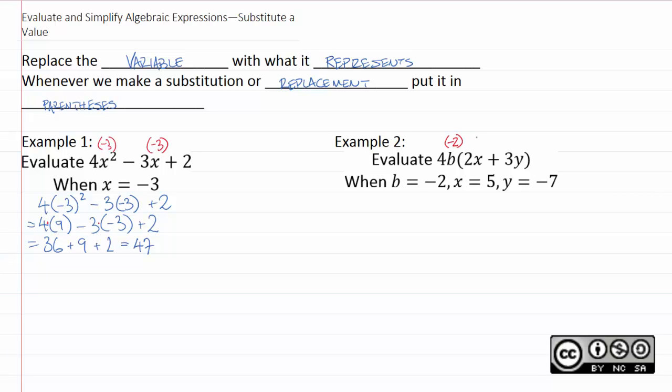Here we just put negative two where b is, five where x is, and negative seven where y is. And everything works out the same. So we'll have four times negative two.